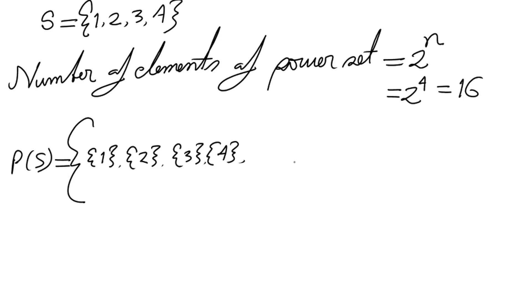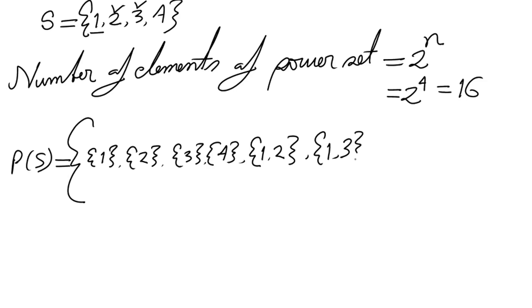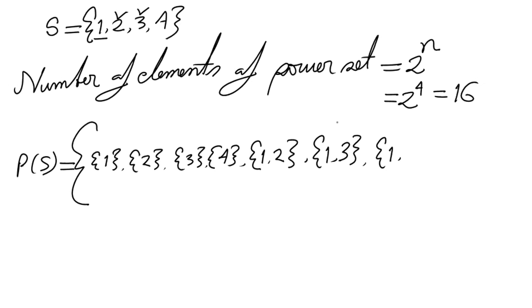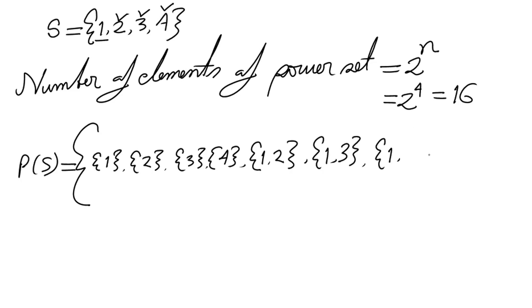Then we write the subsets with two elements. Starting with 1: we have {1,2}, then {1,3}, then {1,4}. We have completed all possible combinations starting with 1.